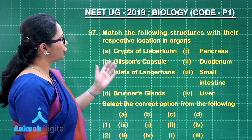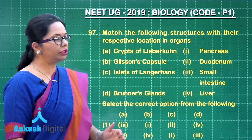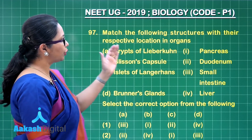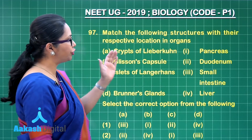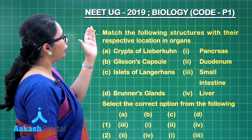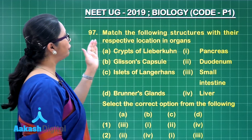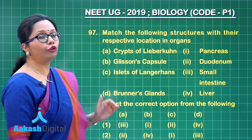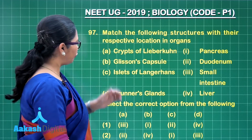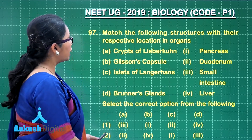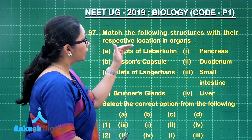Here we have a question based on match the columns, and this question is from digestion and absorption. We have to match the structures with their respective location in the organs. Now, Crypts of Lieberkühn are the digestive glands which are present in the small intestine.